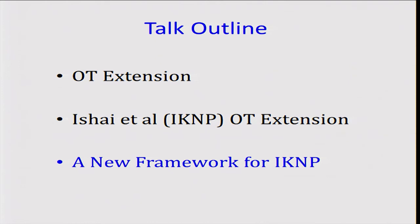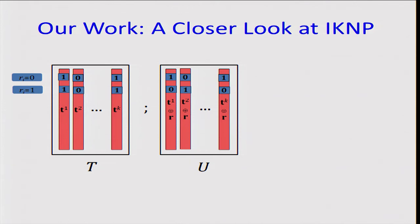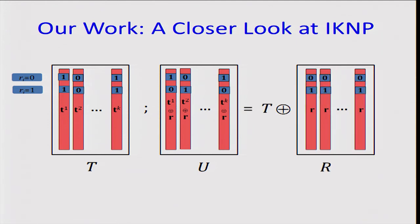In the next part of the talk, we'll propose a more general framework for IKNP and show how to improve the efficiency of IKNP. As a starting point, we take a closer look at IKNP. We see that the receiver is going to select this N by K matrix, which is a random matrix, and then it is going to generate this other matrix, where the ith column here would be the ith column here XOR the selection vector R. In other words, U is exactly equal to T XOR capital R, where capital R is a matrix in which all rows are exactly identical, which is equal to the selection vector of the receiver.